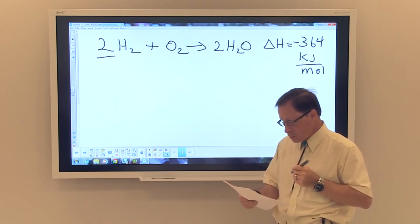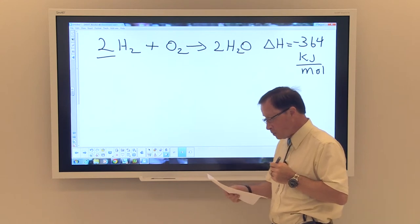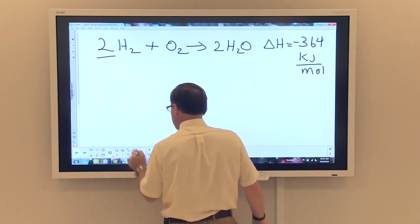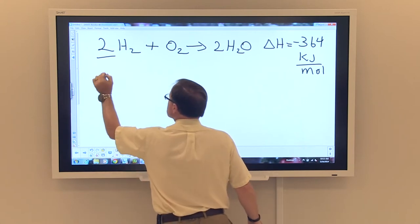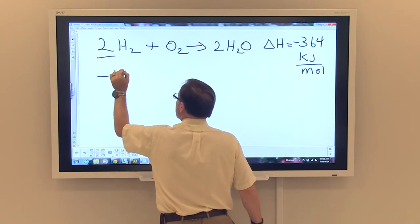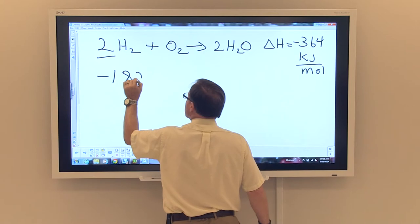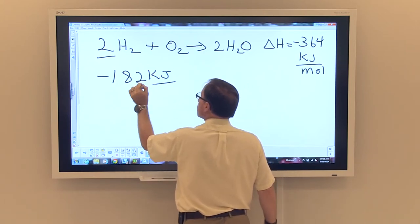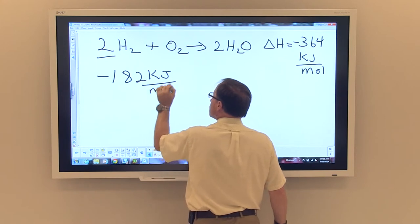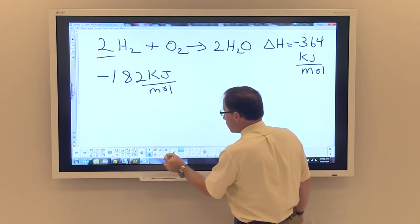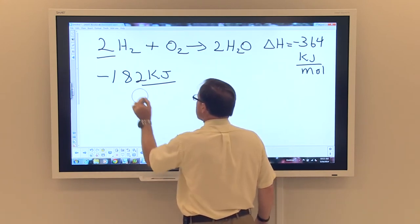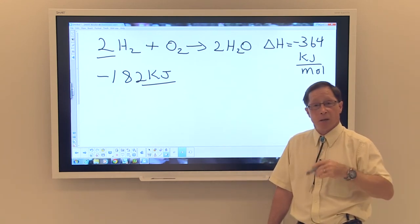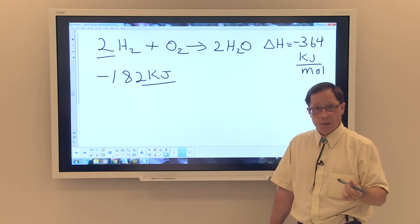What if I told you that we had a negative 182 kilojoules of energy per mole? A negative 182 kilojoules of energy that was emitted by the reaction.